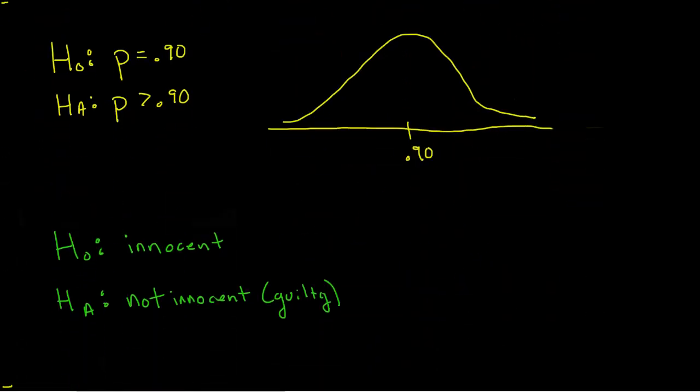Imagine we have a null hypothesis that the true proportion equals 90%, and the alternative is a one-tailed upper test where we claim that the true proportion is greater than 90%. Now, what that means is that we're looking for something significant to happen way out here. Well, if we do find a sample way out here, then we're going to reject the null, and we're going to go with the alternative.